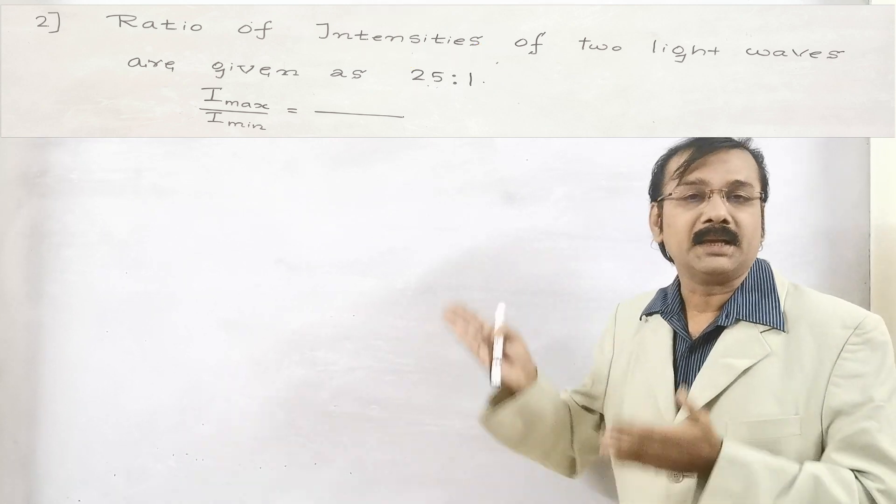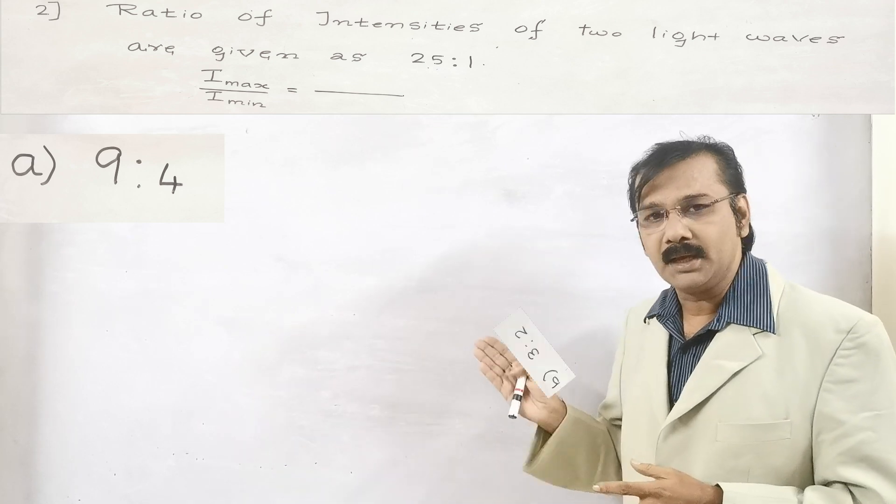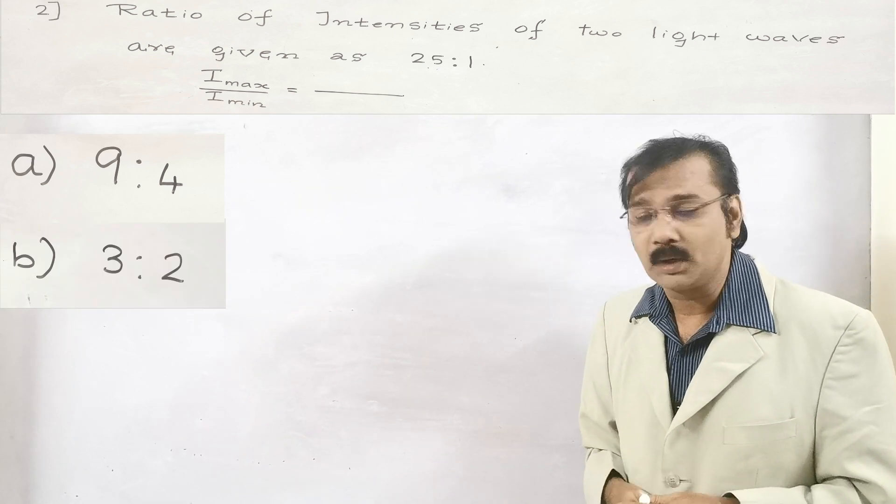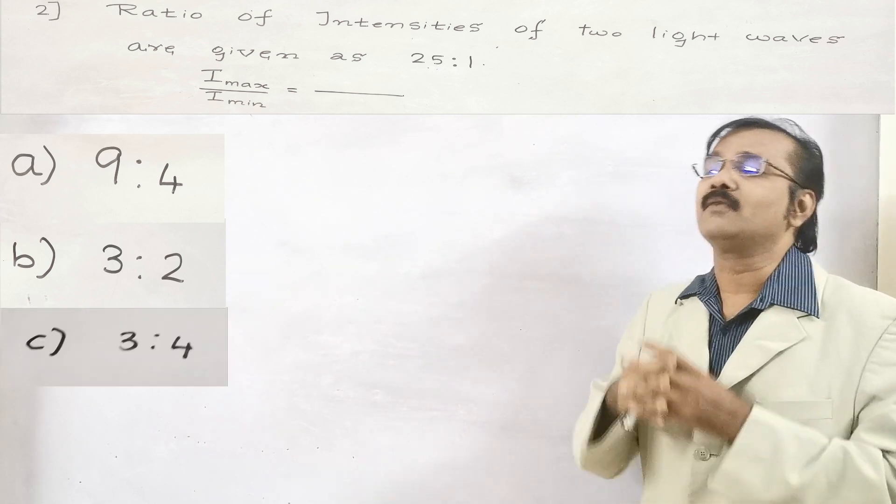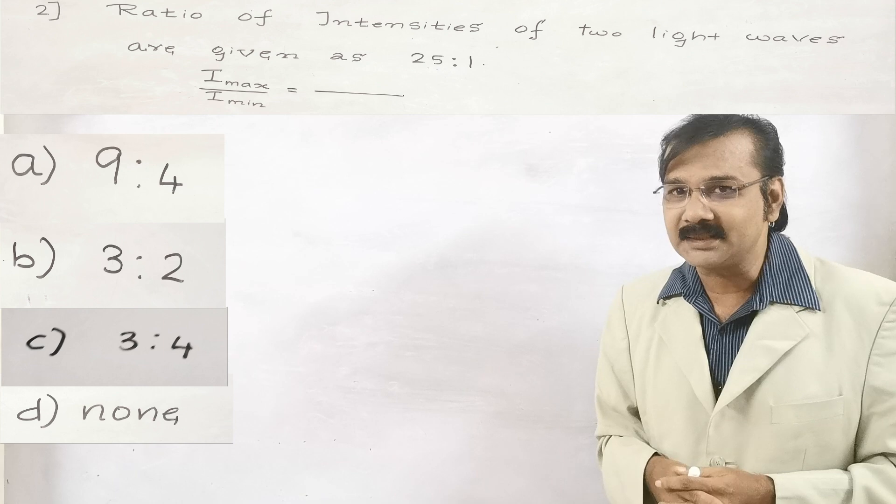What are they? A is option 9 is to 4. B, the option is 3 is to 2. And C, the option is 3 is to 4. And finally, it is none of them. And what will be your answer?